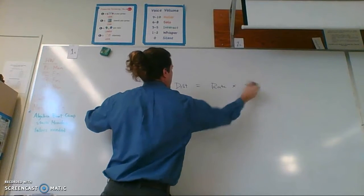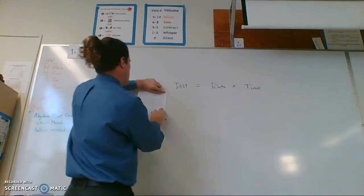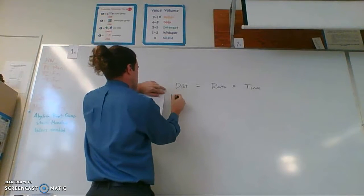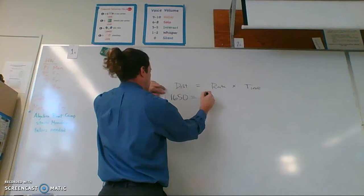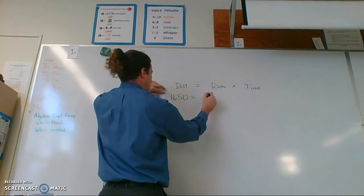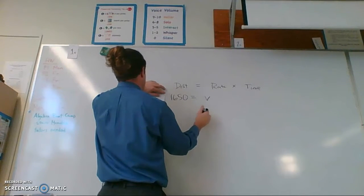Distance equals rate times time. Rate, speed, velocity - whatever, I'm not looking at the physics right. So 1650 equals, I'll call it V times time.